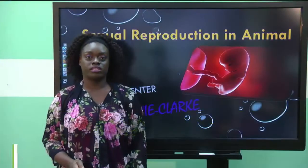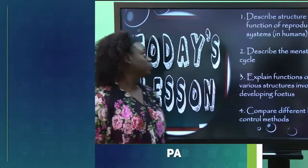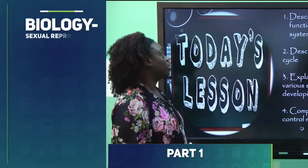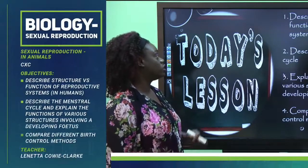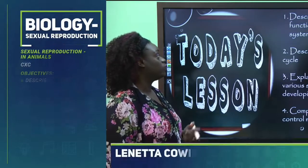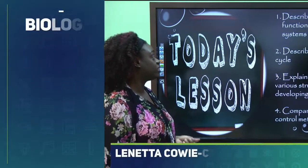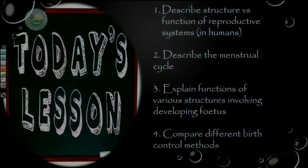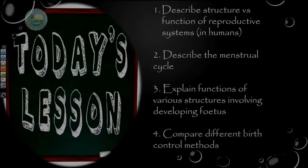Let's look at our objectives for today. We would like you to be able to describe the structure and function of reproductive systems in humans, describe the menstrual cycle, explain functions of various structures involving the developing fetus, and finally compare different birth control methods.